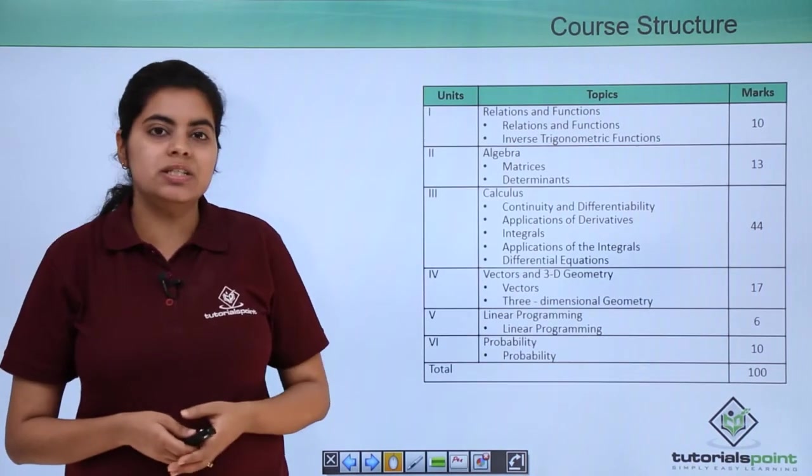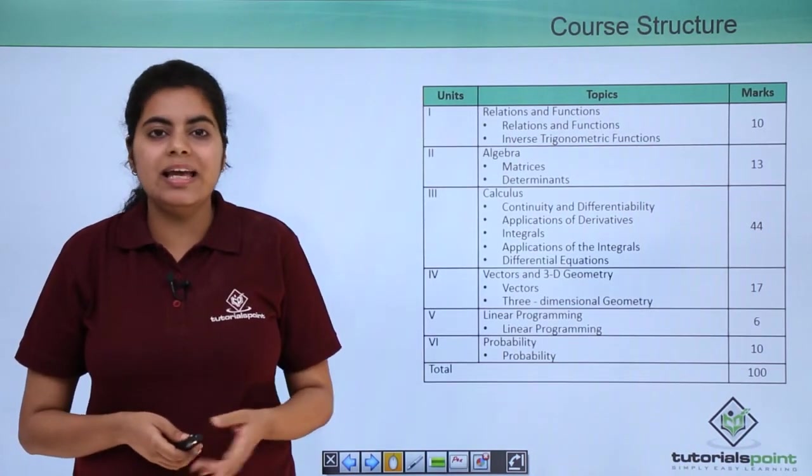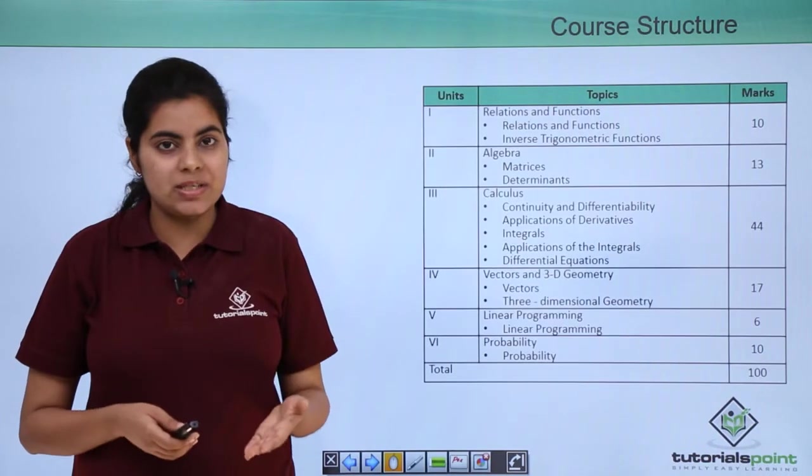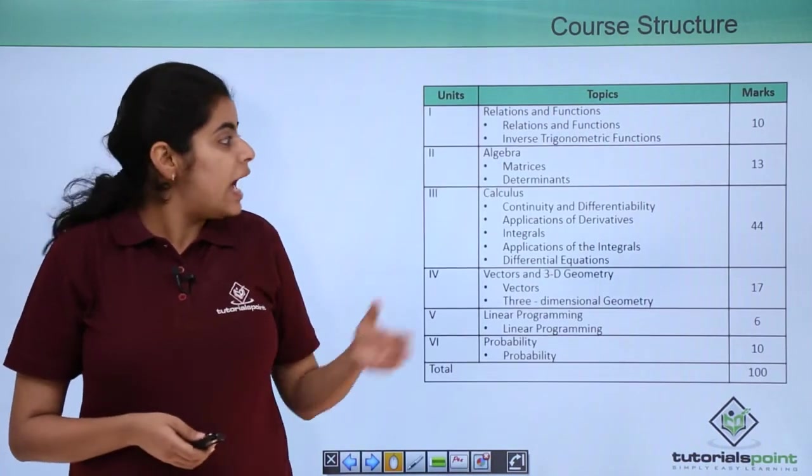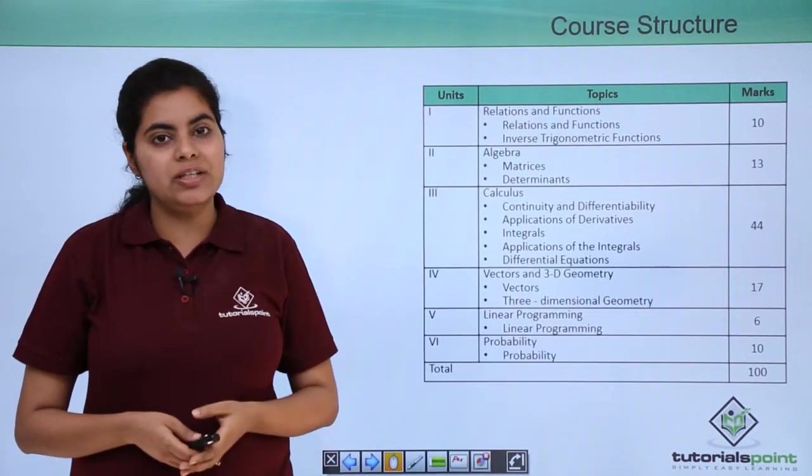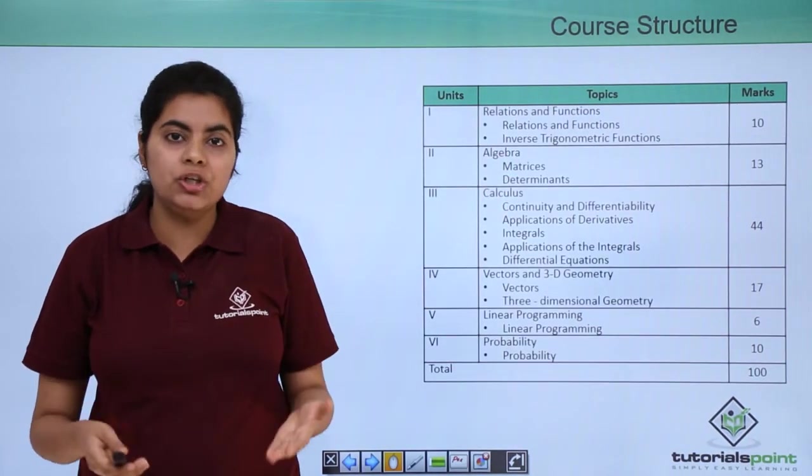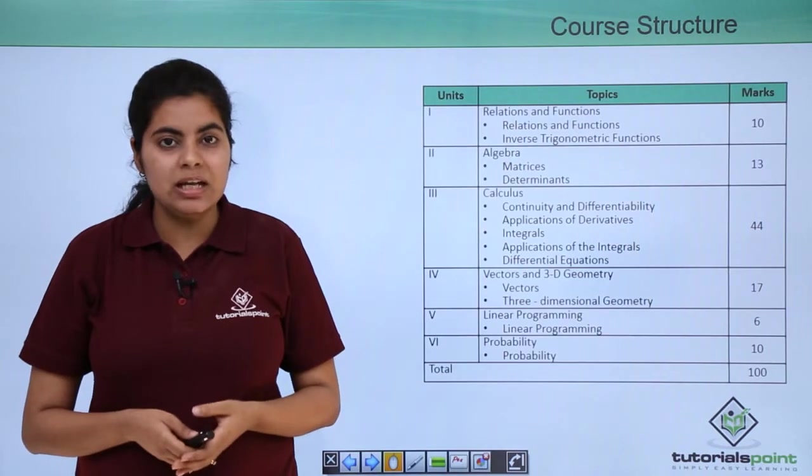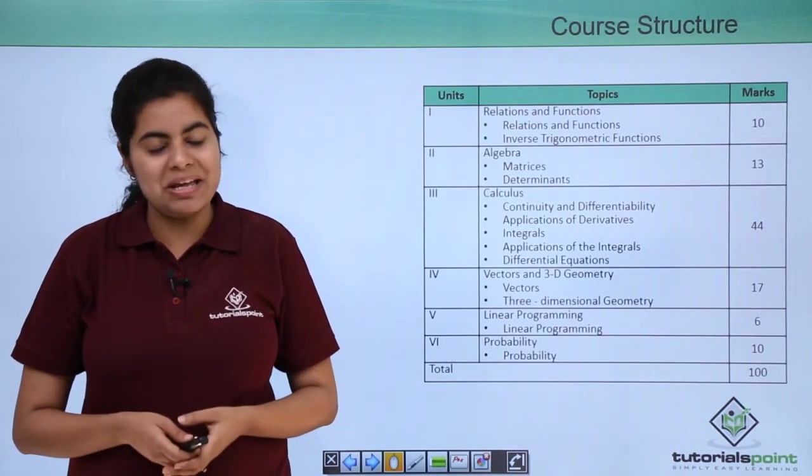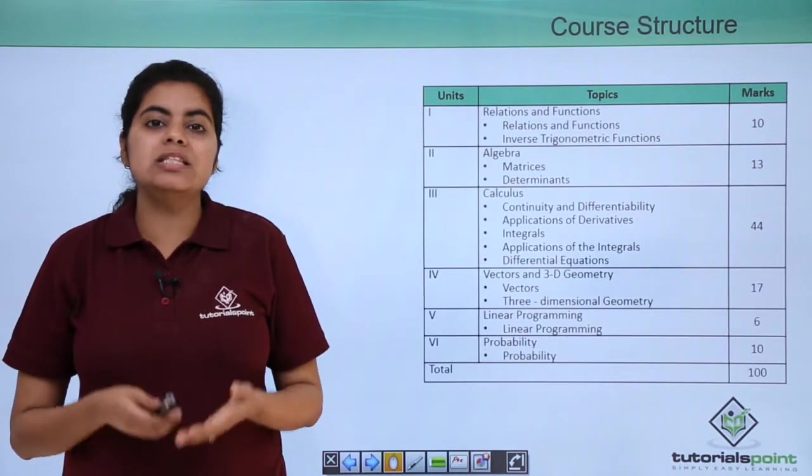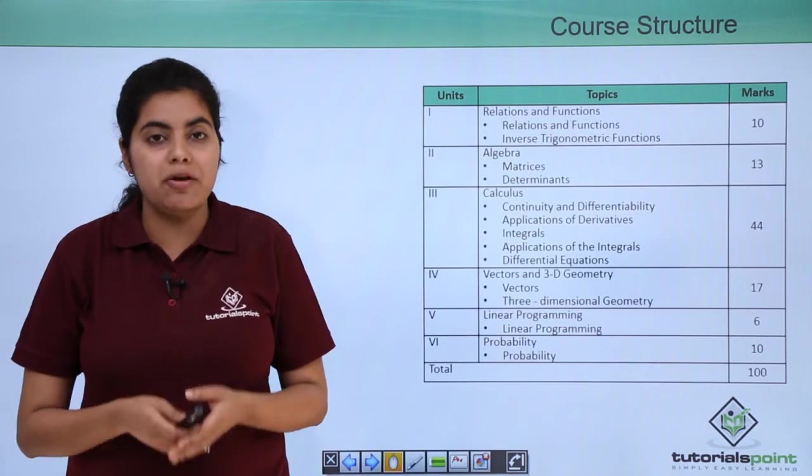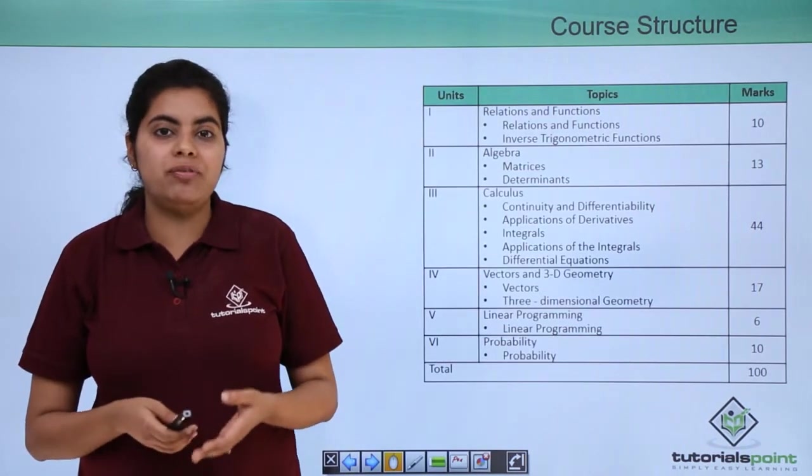About the second unit that is algebra there are again two chapters, matrices and determinants. And this unit has overall weightage as you can see of 13 marks. 13 marks are a huge number when considered for scoring good marks in mathematics. This is one of the easiest unit which everybody can do and everybody finds interesting.